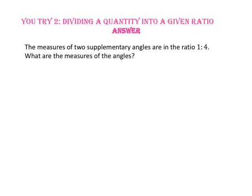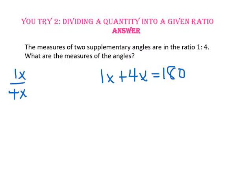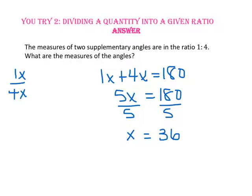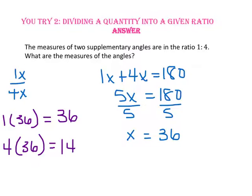Pause the video and do you try number 2. The measure of two supplementary angles are in the ratio 1 to 4. What are the measures of the angles? Remember, supplementary means it has a sum of 180. Since 1 plus 4 equals 5, we know we want to multiply each number, 1 and 4, by the same value. Let's use x. So we will add 1x and 4x and that should equal 180. 5x will equal 180. Divide both sides by 5 and x equals 36. The smaller angle will be 1 times 36, or 36, and the larger angle will be 4 times 36, which is 144. So our two angles are 36 degrees and 144 degrees. To double check, add 36 to 144, and since we get 180, we know we are correct.